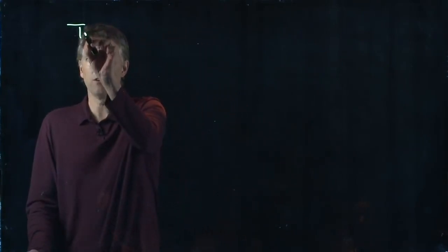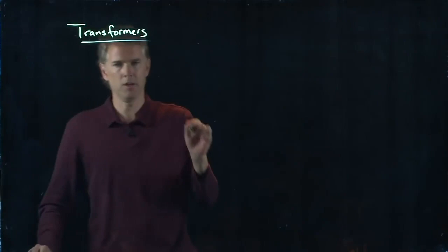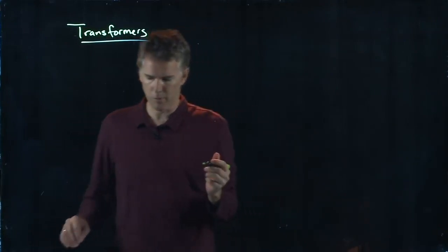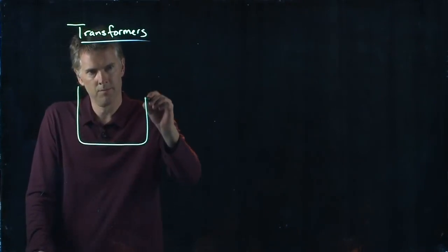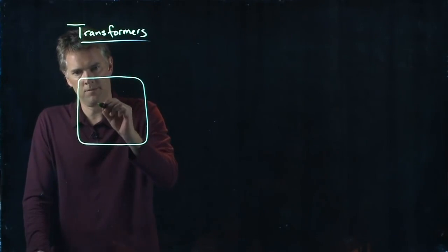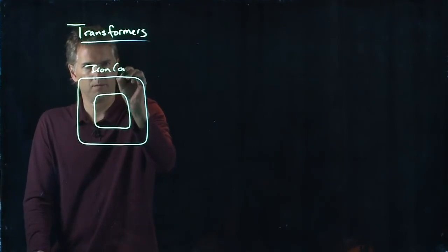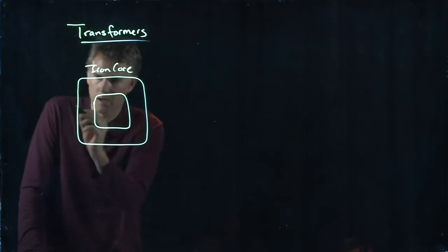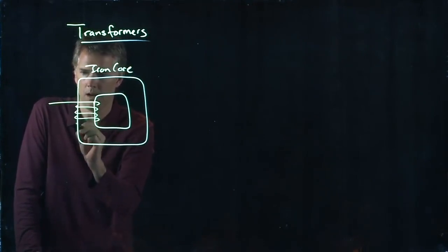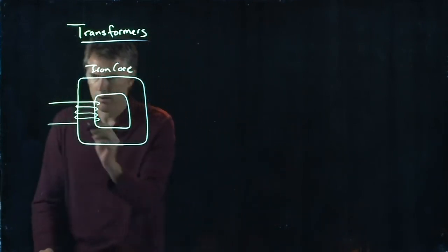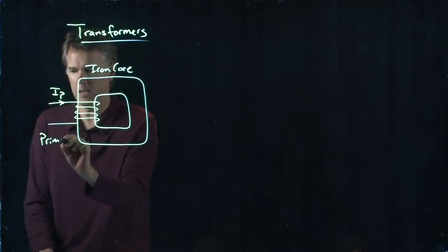And let's do it with a particular configuration. If you do it in this configuration, it's called a transformer. So it looks a little bit like this. You're going to take an iron core, and now you're going to take the coil and wrap it around this side of that iron. And that is our primary coil, and we run IP through it.